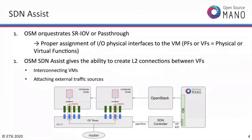SDN Assist is a feature of OSM that takes care of this configuration. OSM orchestrates SR-IOV or pass-through by assigning the physical interfaces to the VM — PFs (physical functions), which is how we call a pass-through interface or physical NIC when used completely for a virtual machine, or virtual functions (VFs), where the NIC is virtualized into many PCI addresses so it can be shared with many virtual machines. This part we already reviewed: we just put in the model that we want SR-IOV, and given a compute node configured for SR-IOV, it will place the VM there and assign a VF to it.